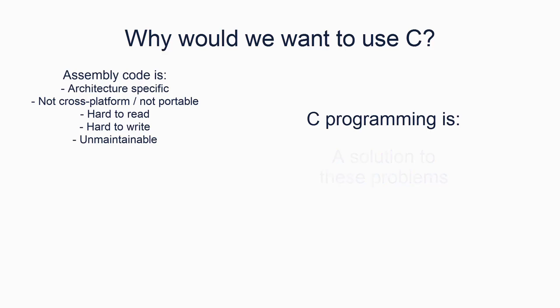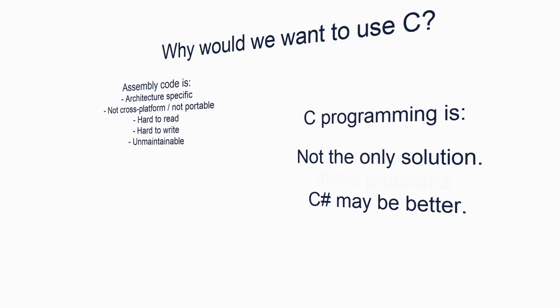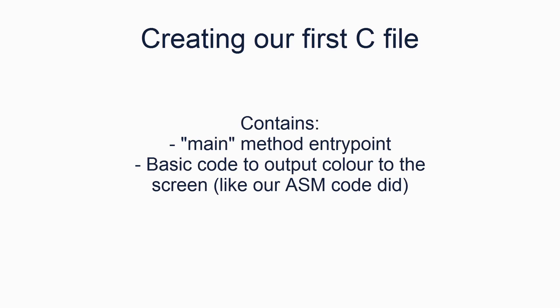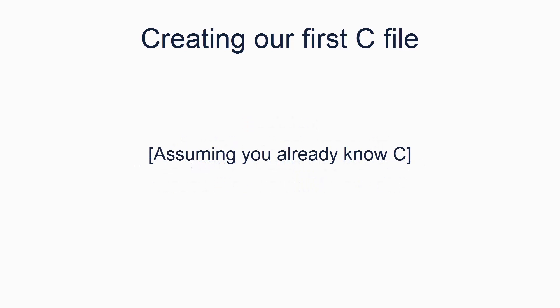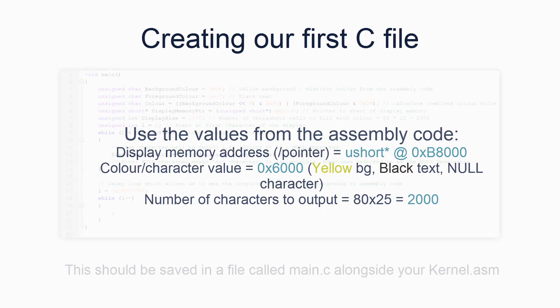There are a lot of incentives for using C. However, in the next tutorial we will also look at how you can use C#, which is favorable for a number of reasons, which will be discussed next time. We'll start by creating a simple C file which will contain a main entry point for our operating system. The code in this main method will execute after our existing assembly code. The method will contain some very simple code to output color to the screen, like we did in assembly code. I'm assuming you already understand C and pointers, so you should be able to produce the main method code as described fairly easily. You can use the values from the assembly code for the pointer values and such like. The following block of code should be what you have in your main method.